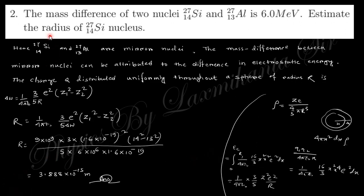Next question says the mass difference of two nuclei, silicon-27 and aluminum-27, is 6 MeV. Estimate the radius of this one. Actually these two are mirror nuclei, and for mirror nuclei the radius can be obtained by this relation.